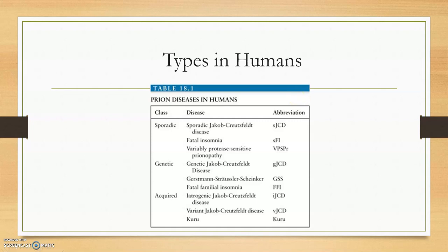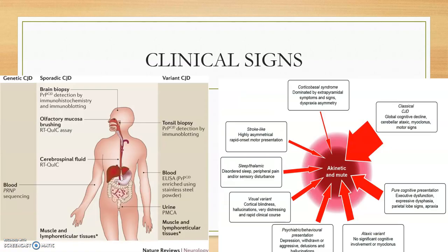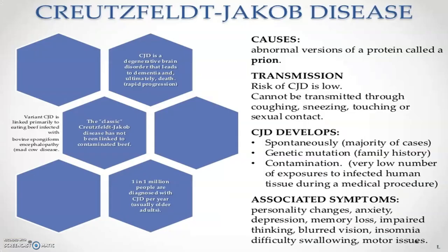In humans, while prion disease can transfer from animals to humans, it is not strictly zoonotic. Types include sporadic Creutzfeldt–Jakob disease (CJD), sometimes genetic CJD due to genetic imbalance, and the acquired form known as kuru, which is very famous. Clinical signs of CJD include personality changes, akin to brain lesions.